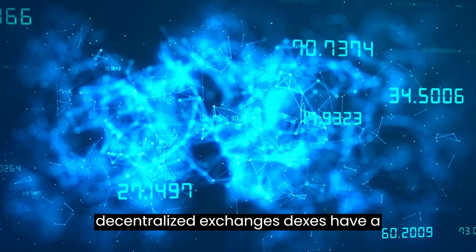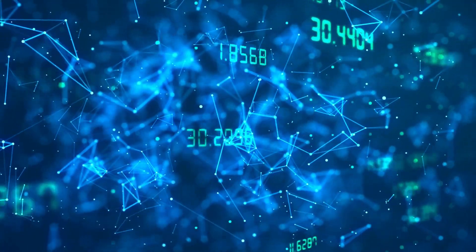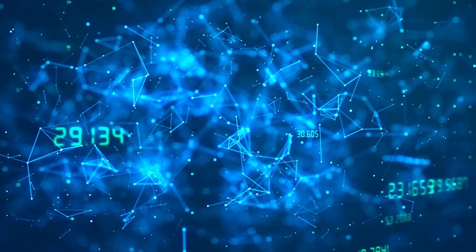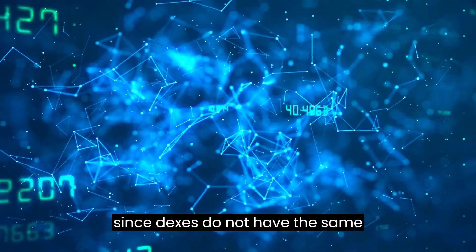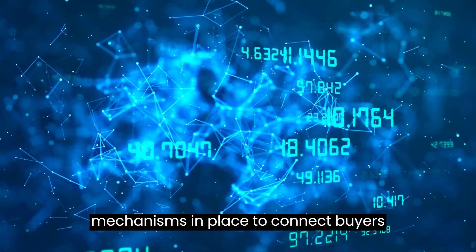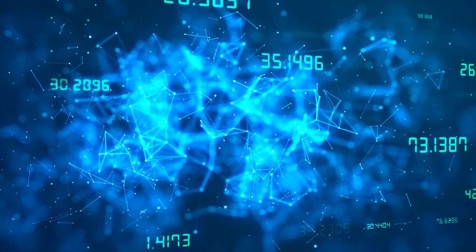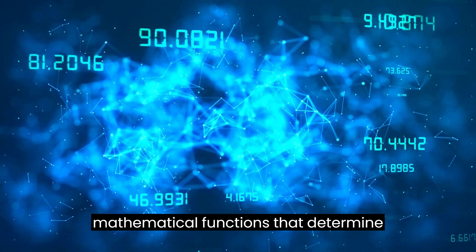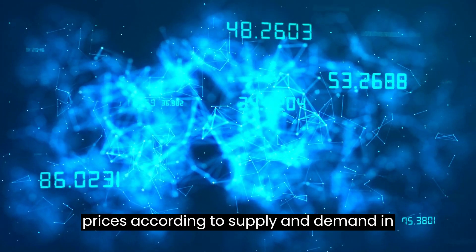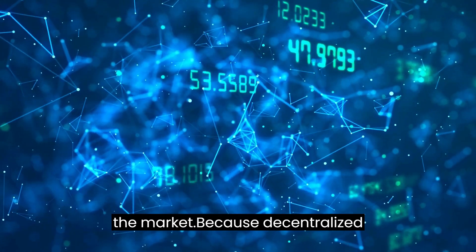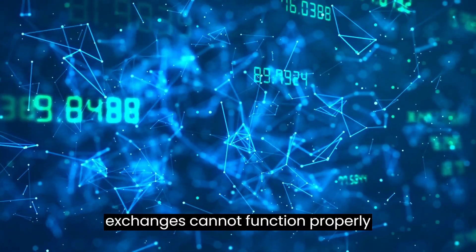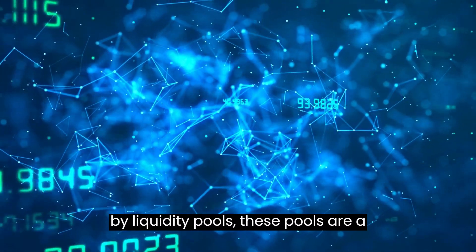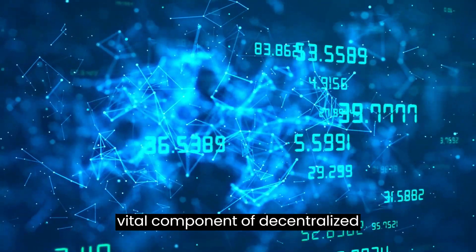However, decentralized exchanges (DEXs) have a higher demand for liquidity than centralized exchanges do. This is since DEXs do not have the same mechanisms in place to connect buyers and sellers. They make use of automated market makers (AMMs), which are mathematical functions that determine prices according to supply and demand in the market. Because decentralized exchanges cannot function properly without the liquidity that is provided by liquidity pools, these pools are a vital component of decentralized exchanges.